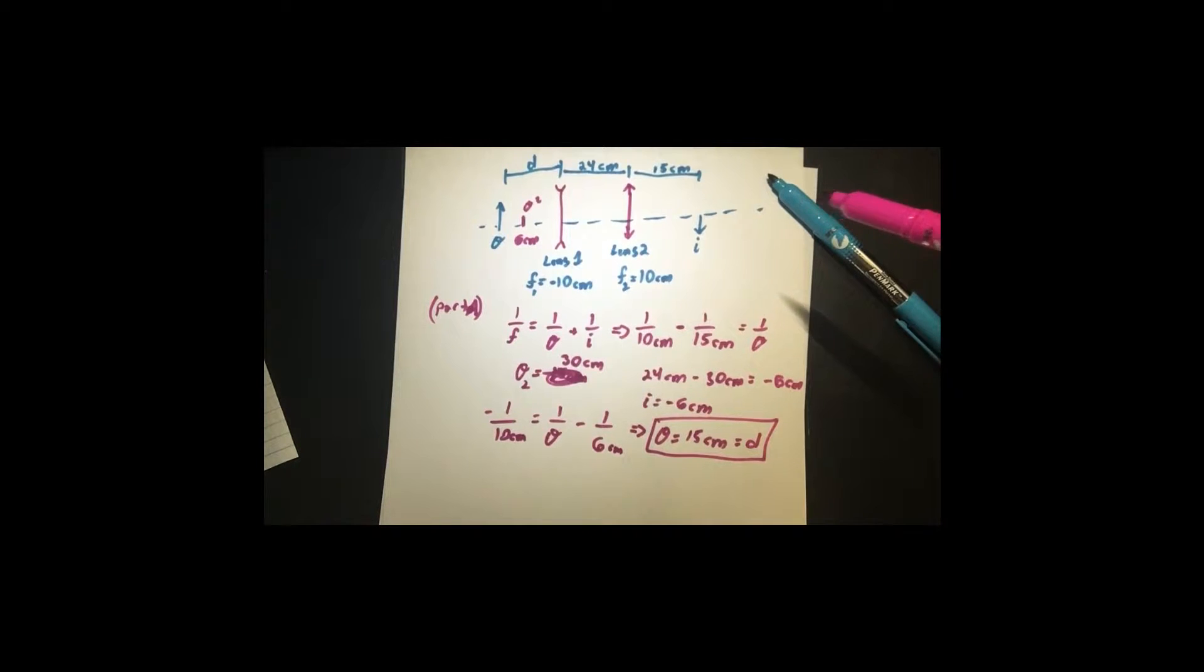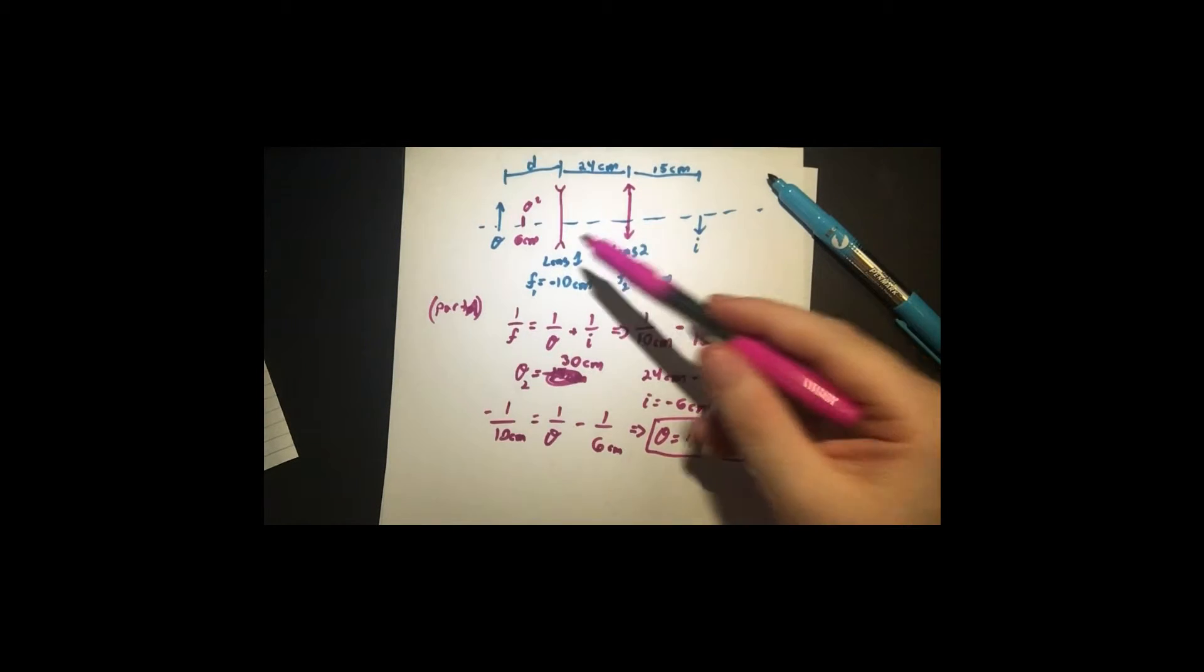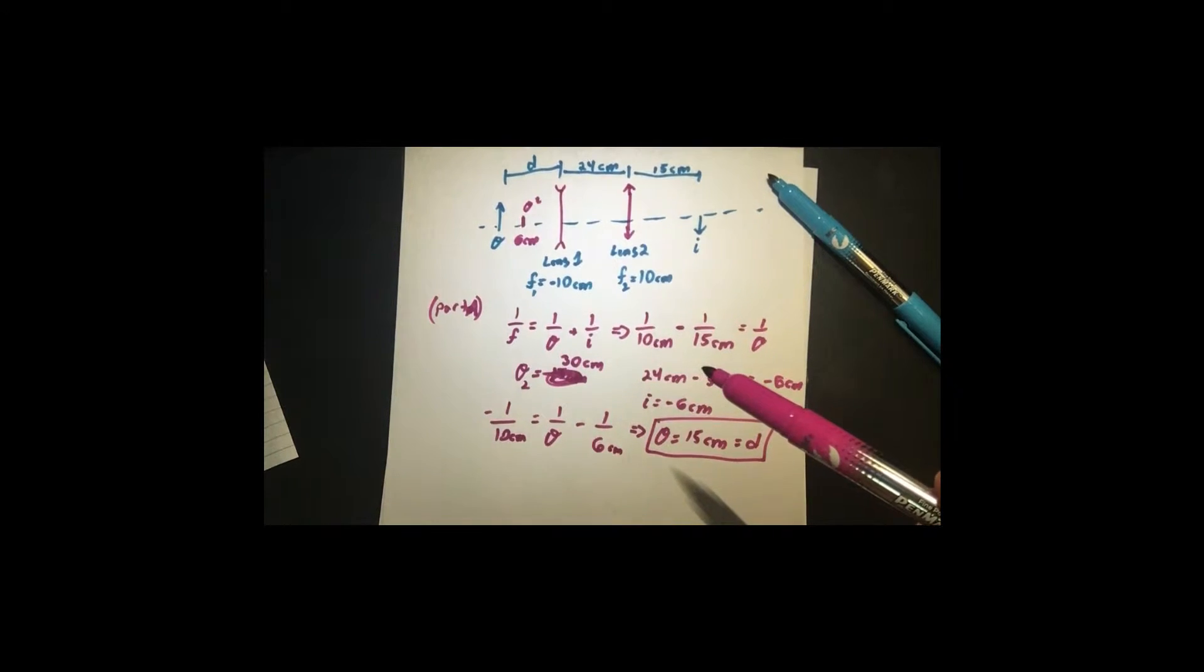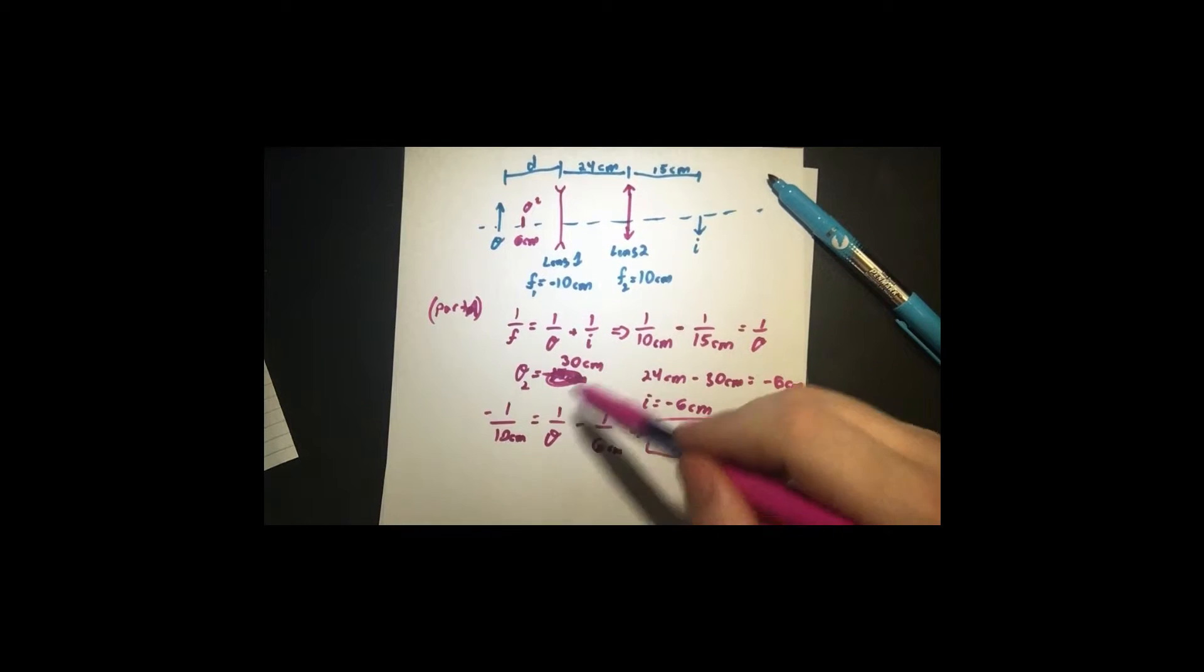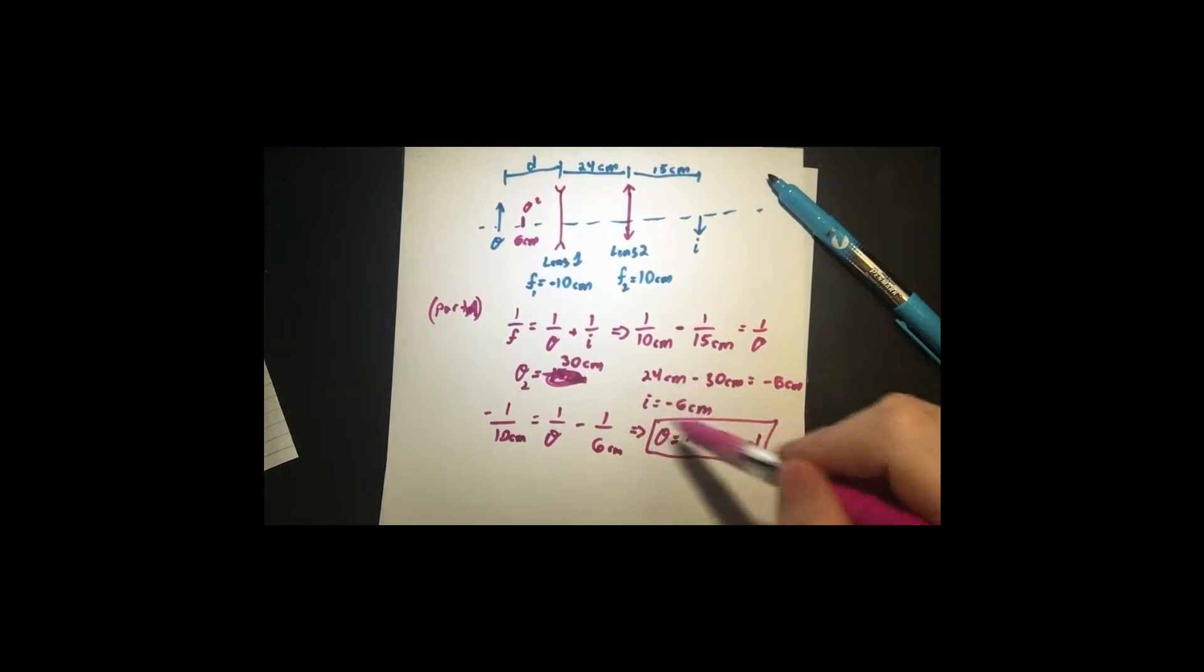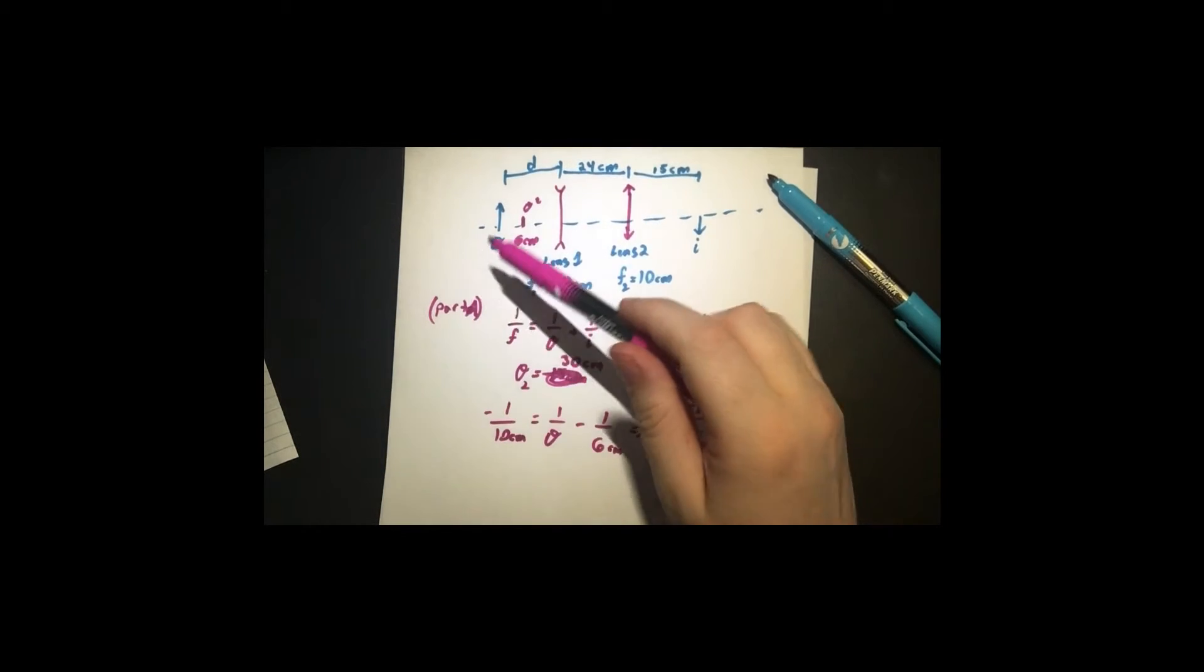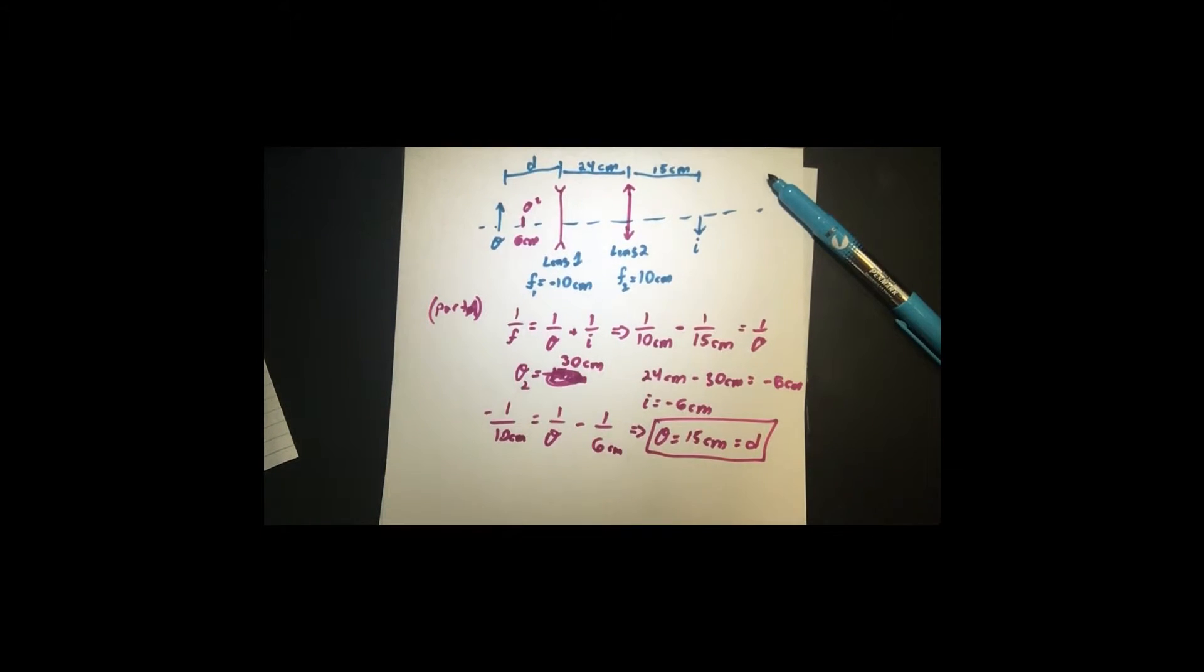So when we plug this in to our equation here, it's a real image, but it is a negative 6 cm image. So we plug that in, and plug in the focal length of negative 10 cm, and you put it as 1 over 10, and then solve for our object distance, and we get 15 cm.